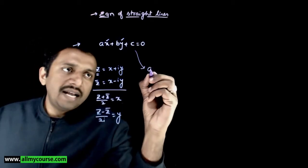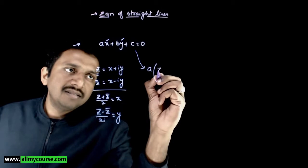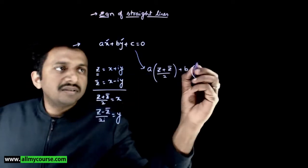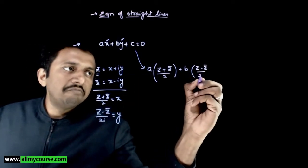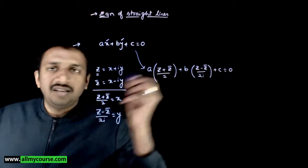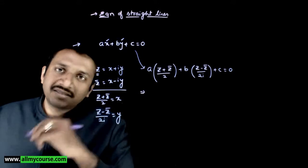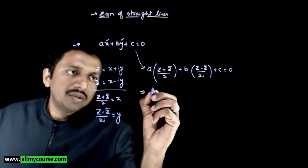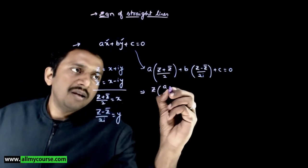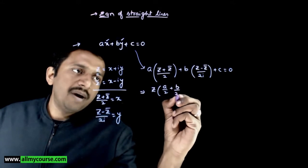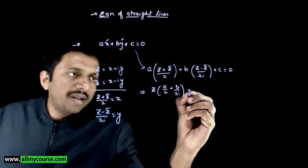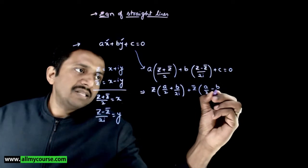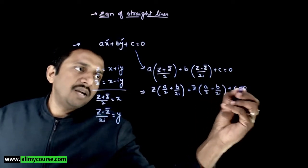Let us perform this substitution. We get a times (z plus z̄)/2 plus b times (z minus z̄)/2i plus c equals zero. Collecting the z terms, we get z times (a/2 plus b/2i) plus z̄ times (a/2 minus b/2i) plus c equals zero.